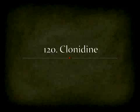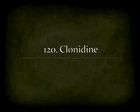Next is terazosin — I've always pronounced it that way, but I've also heard it as terazosin. The brand name is Hytrin (H-Y-T-R-I-N), and that's one of the alpha blockers. Then we move on to just one of the alpha agonists, and this is clonidine, which is Catapres (C-A-T-A-P-R-E-S).